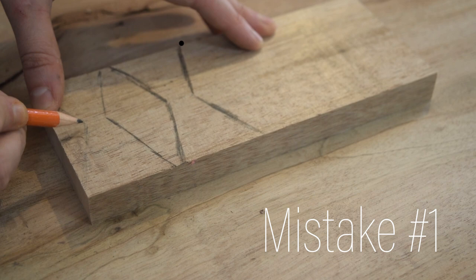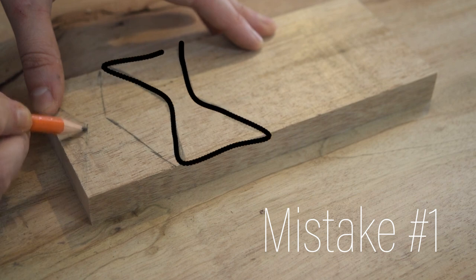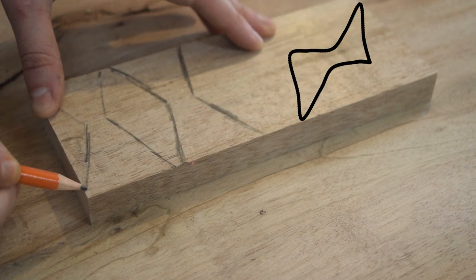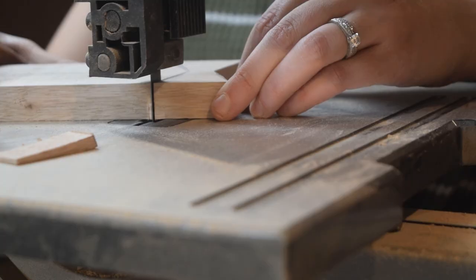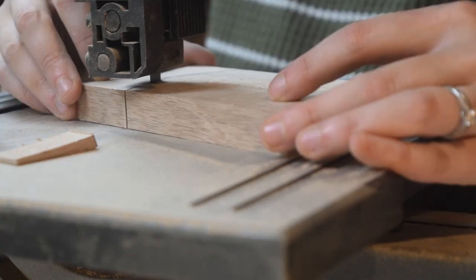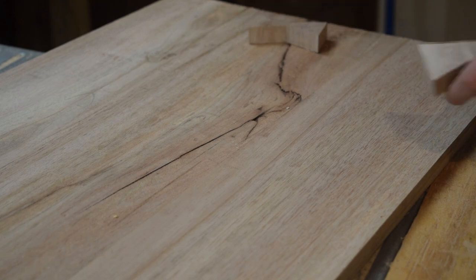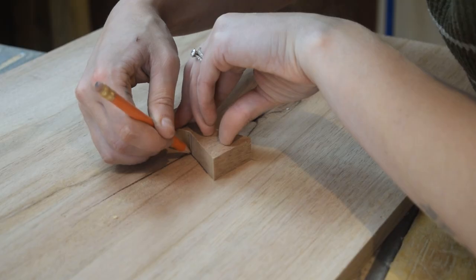Leading to mistake number one. I should have sketched these along the long grain to take the greatest advantage of the bowtie's grain strength. I then made quick work of cutting them out on the bandsaw. After that, I decided where to put them and marked the panel accordingly.